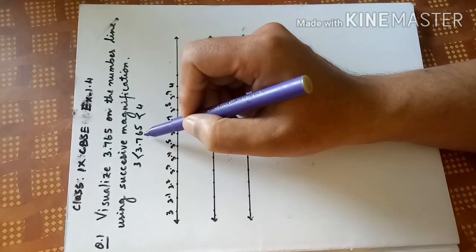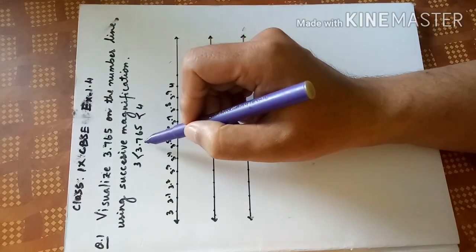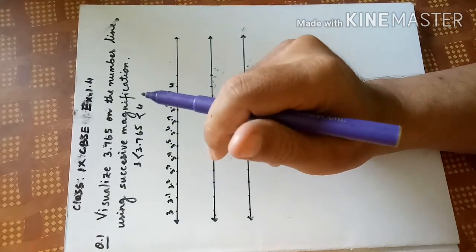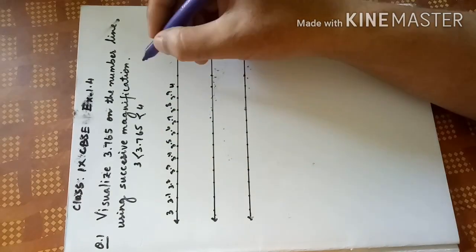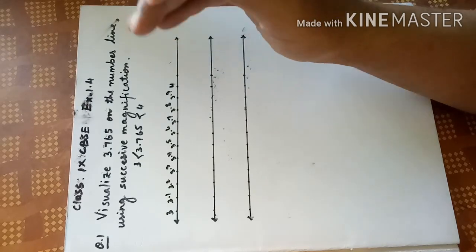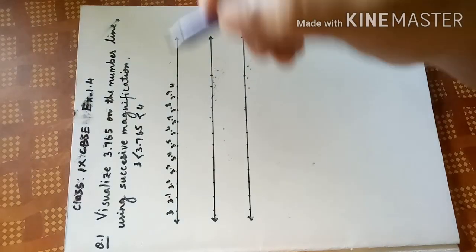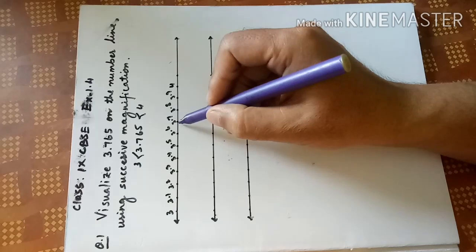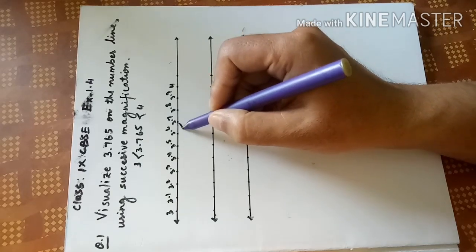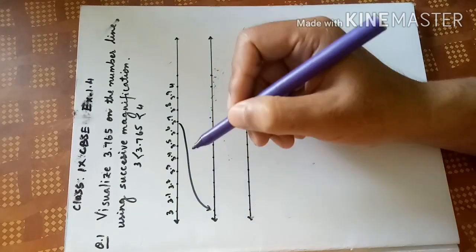Now then after, what is the digit? 6. 3.76 means what is the meaning? It is bigger than 3.7 but less than 3.8. So you start from 3.7 again. It is between 3.7 and 3.8.